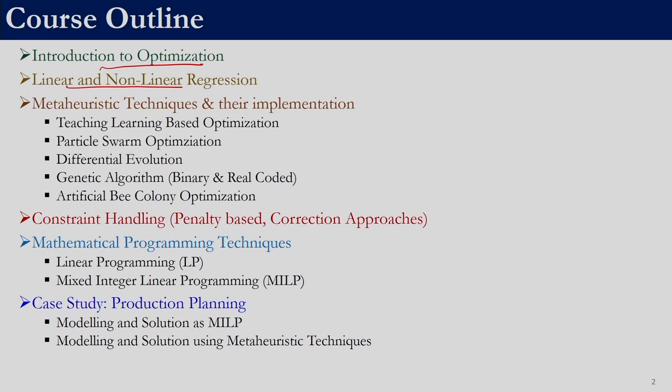In this we will be basically doing that given a set of data points and a model, how do we find out the model coefficients. Then we will be discussing five meta-heuristic techniques: teaching learning based optimization, particle swarm optimization, differential evolution, genetic algorithm, and artificial bee colony optimization.